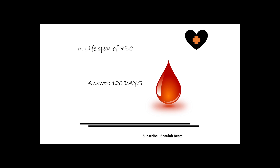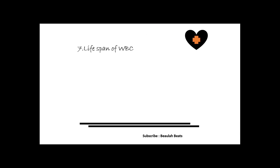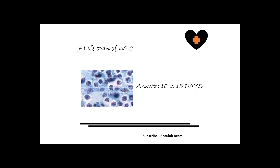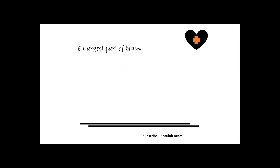The seventh question is: what is the lifespan of WBCs? WBCs are also called leukocytes. They play a vital role in the immune system, acting against infection. The answer is 10 to 15 days. The eighth question is: which is the largest part of the brain?